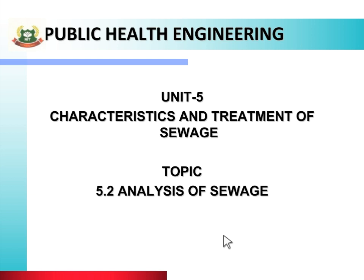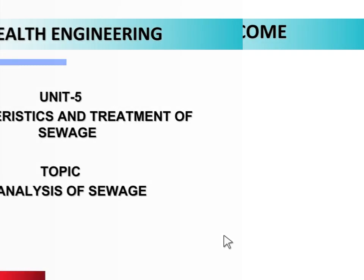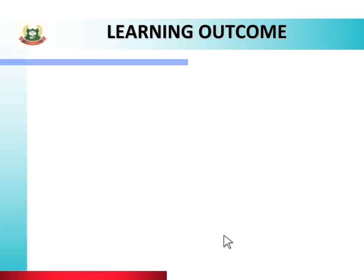We will see Learning Outcome. In Learning Outcome, we will see Course Outcome, Program Outcome and Unit Outcome. Yeh topic padhne ke baad, aapko is topic se related kis baat ka knowledge milega aur practically yeh knowledge aap kahan apply karoge.